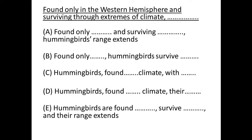Hi, my name is Mandeep. In this question we'll use the elimination process. Option A says 'found only in Western Hemisphere and surviving through extremes of climate.' These two are modifiers, meaning after the comma we'll have a subject. The subject here is 'hummingbird range.' Now, range cannot be found only in the Western Hemisphere and cannot survive through extremes of climate, so the modifiers are not modifying the correct subject. Eliminate A.